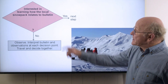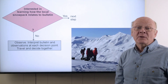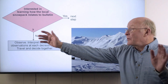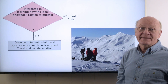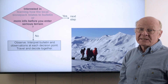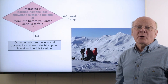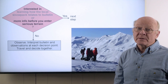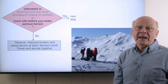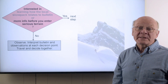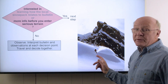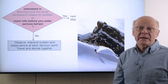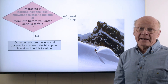One good reason for instability tests is you're interested in learning how the local snowpack relates to the bulletin. Remember that the bulletin applies better to the entire region than to the smaller area of your trip. Another reason for instability tests is you want more information before entering or descending serious terrain. By serious terrain, we mean any slope big enough or steep enough which, under the worst snowpack conditions, could produce an avalanche that could bury or kill a person. We consider slopes that are bigger, steeper, or located above a terrain trap to be serious avalanche terrain, as well as terrain rated as challenging or complex in Canada.